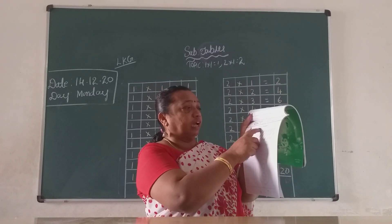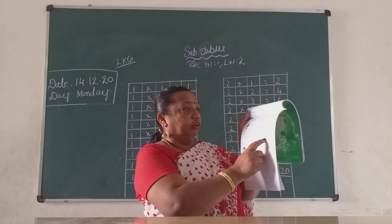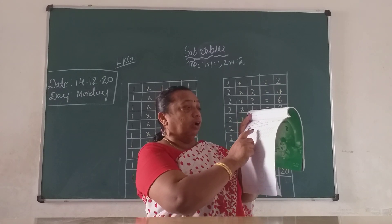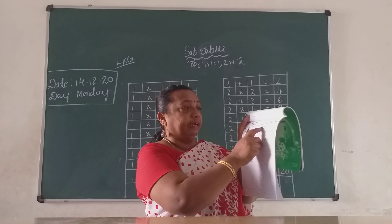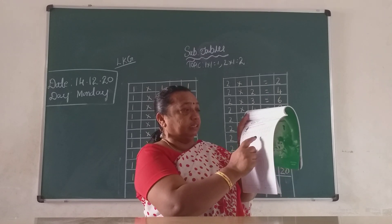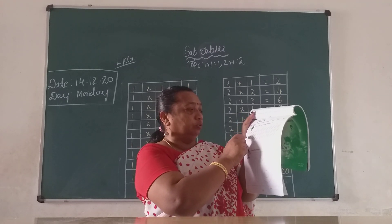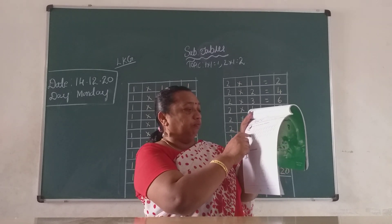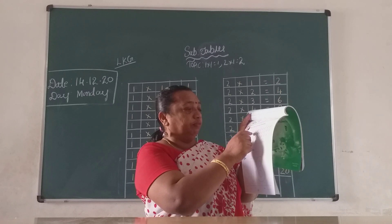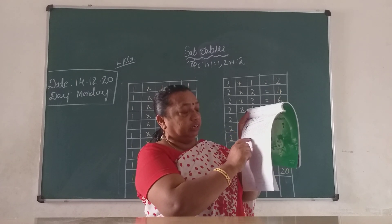Tick the box having eighteen feathers. Here, see children — feathers are there. You have to count and tick. In which box is there eighteen feathers? You have to tick it. Here: one, two, three, four, five, six, seven, eight, nine, ten, eleven, twelve, thirteen, fourteen, fifteen, sixteen, seventeen, eighteen. This one you have to tick.